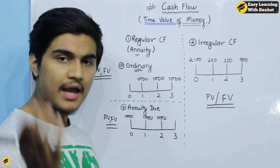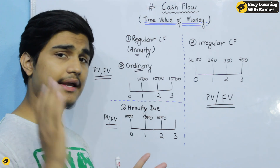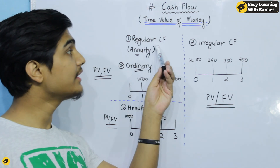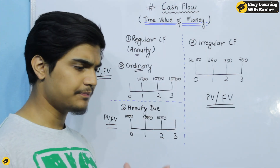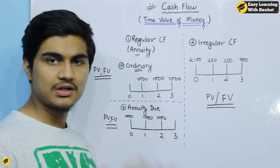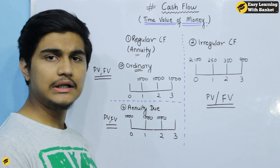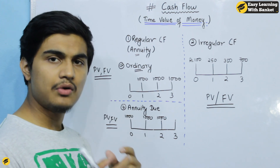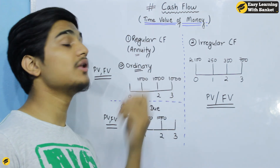Cash flow can be positive or negative, and it can be regular or irregular. Regular cash flow means a fixed interval of time — for example, one year — with a fixed amount of money.